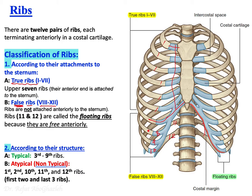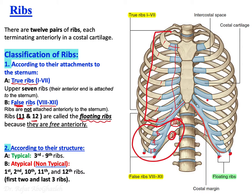False ribs can be further subdivided: ribs 11 and 12 are called floating ribs because their tips are not attached to anything anteriorly. The remaining false ribs (8, 9, 10) are not attached to the sternum either, but they are still connected anteriorly via costal cartilage.